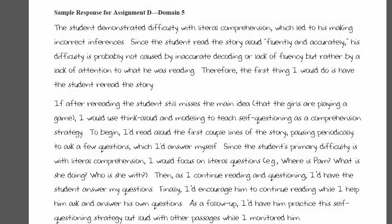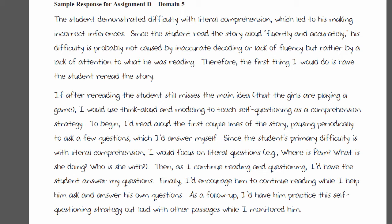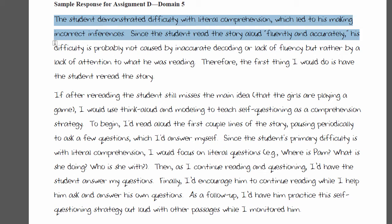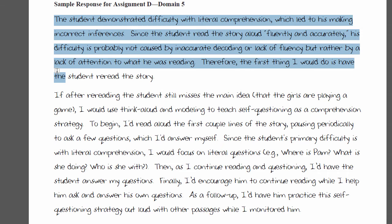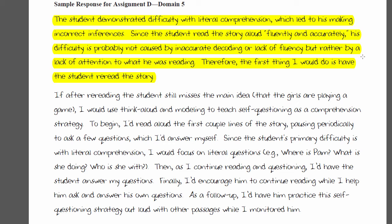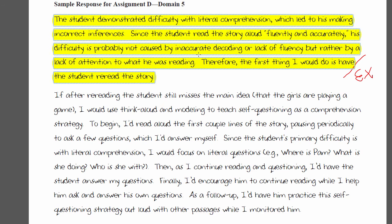The sample answer states: 'The student demonstrated difficulty with literal comprehension, which led to his making incorrect inferences.' That's a very clear statement of the need. Since the student read fluently and accurately, his difficulty is probably not caused by inaccurate decoding or lack of fluency, but rather by a lack of attention to what he's reading. Therefore, the first step is to have the student reread the story silently — when reading aloud, you sometimes focus more on performance than on comprehension.